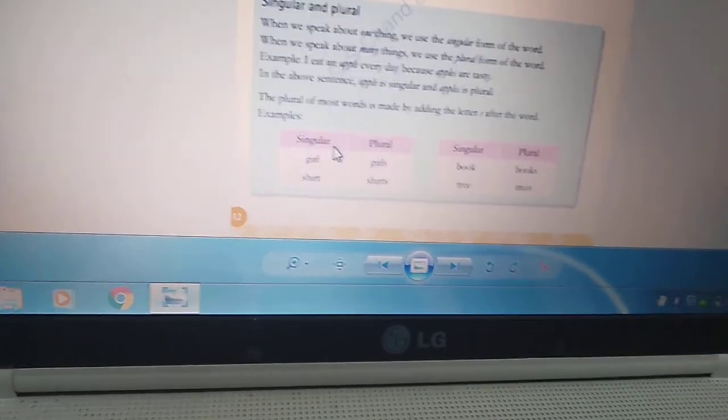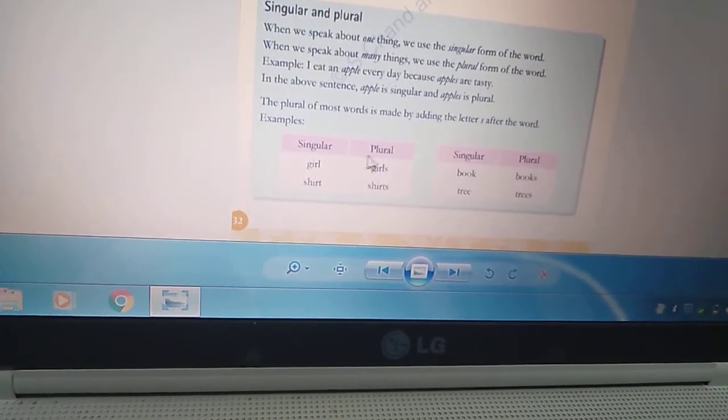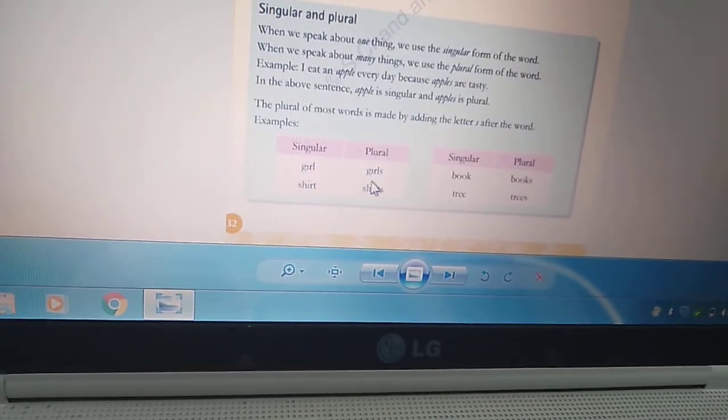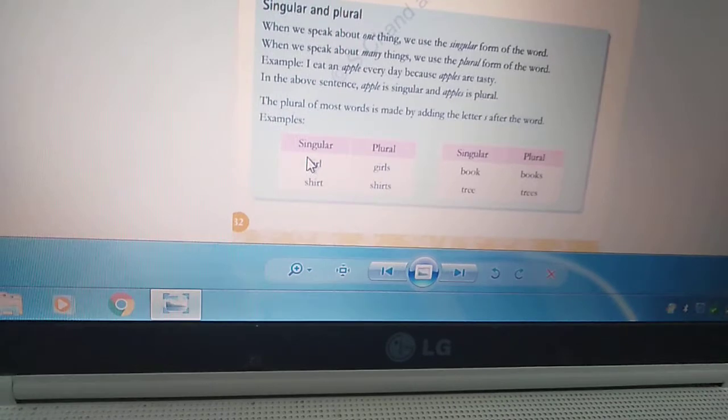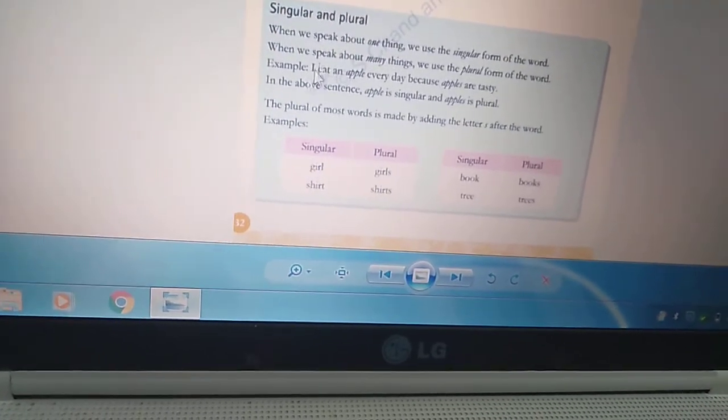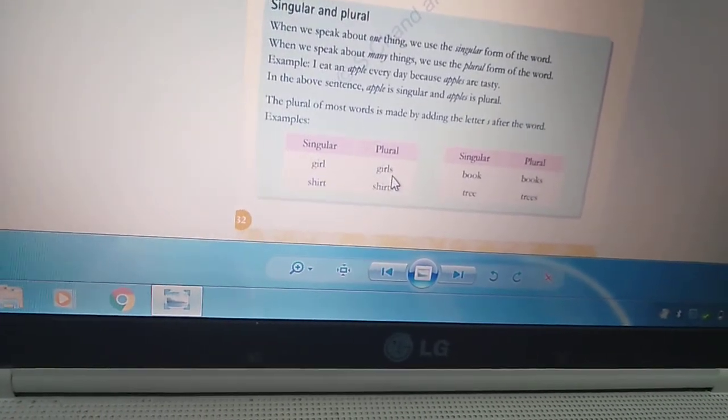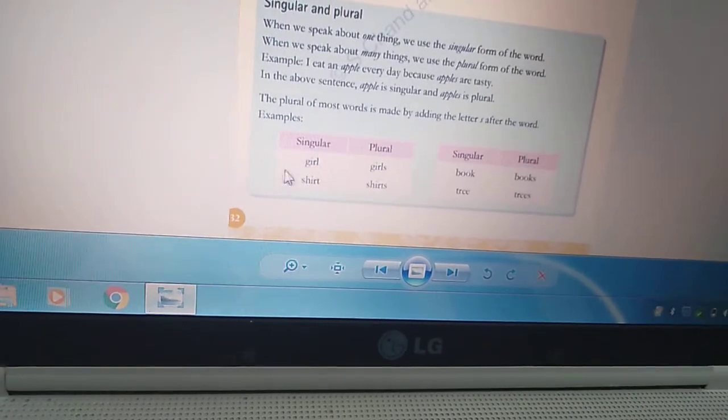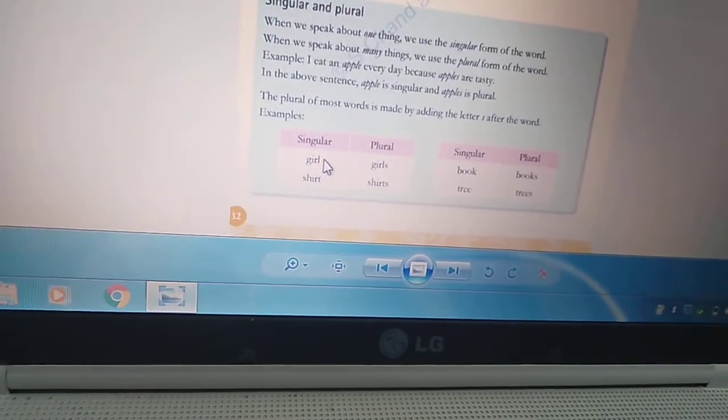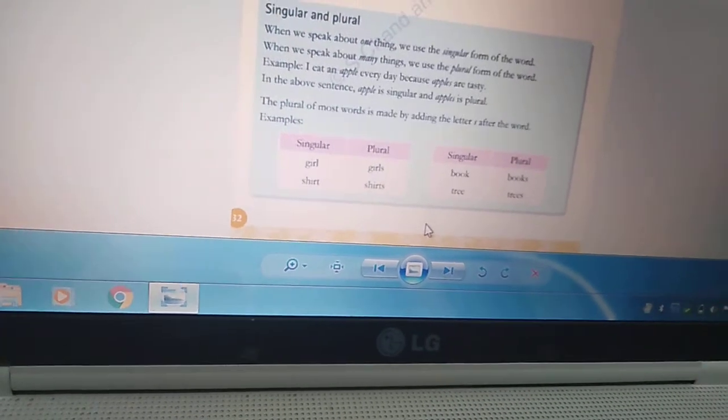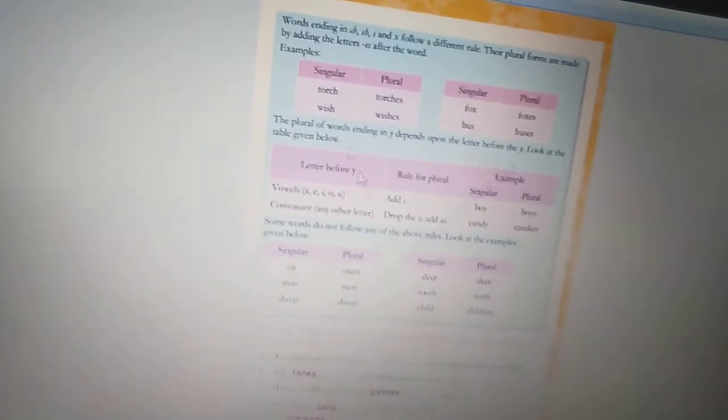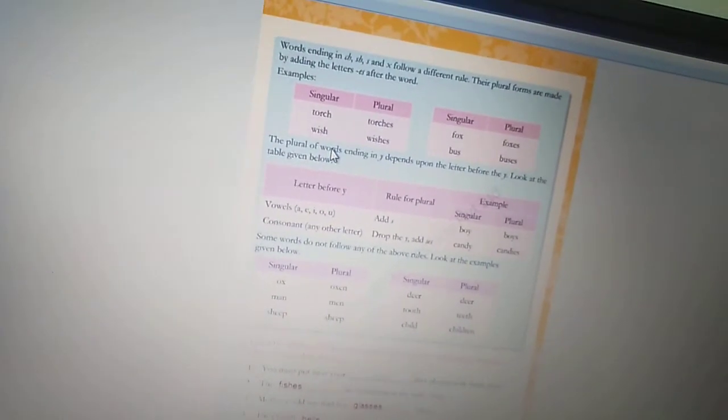To change the form, to change the word from singular form to plural form, we just put s after the word. There are many rules. This is first rule in which we just put s after the word. Girl, girls. Yaha pe hai hum ne kya kiya hai? Girl ke pichhe just s put kiya hai.